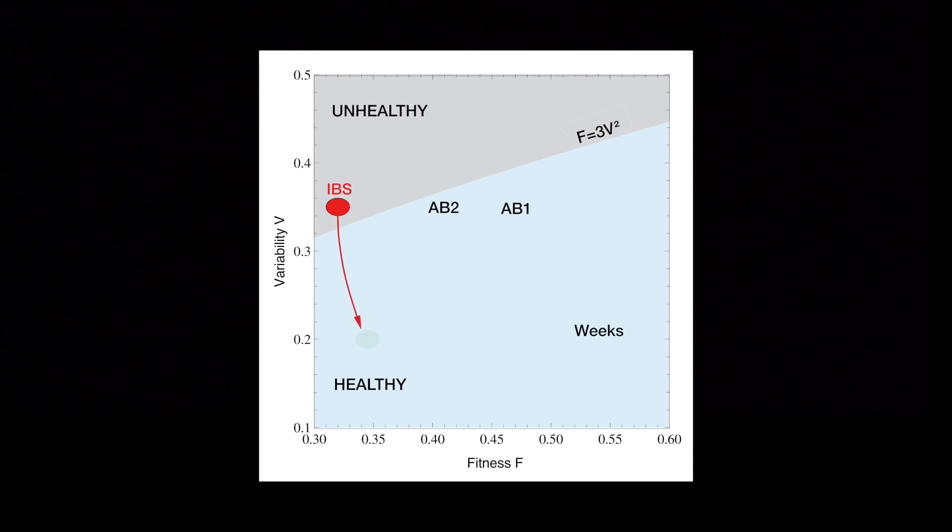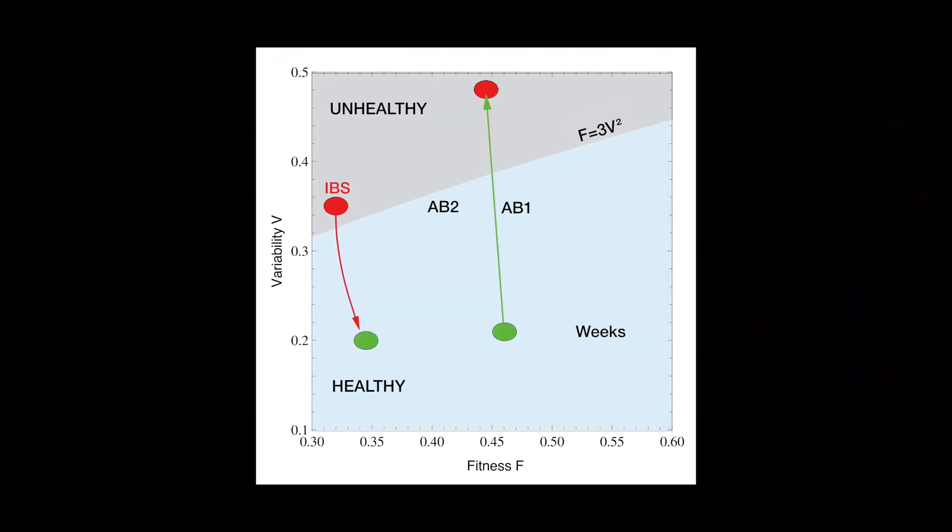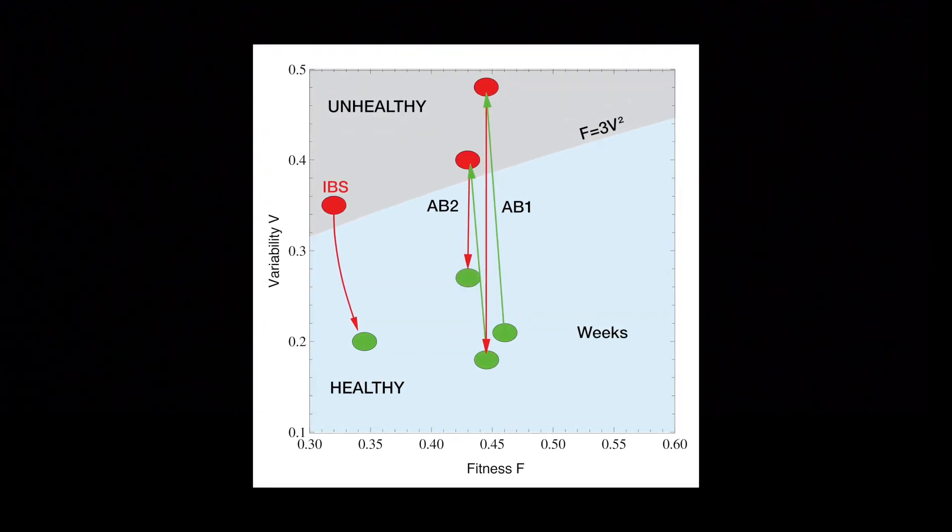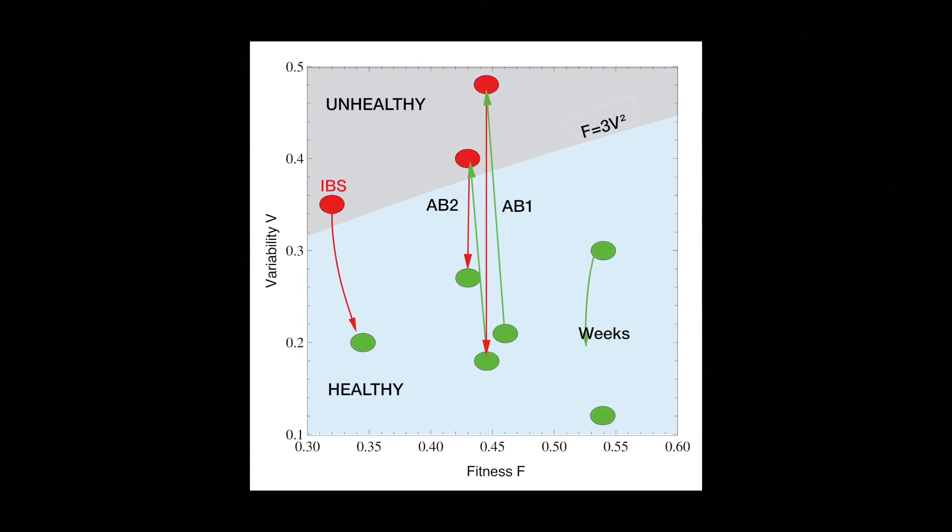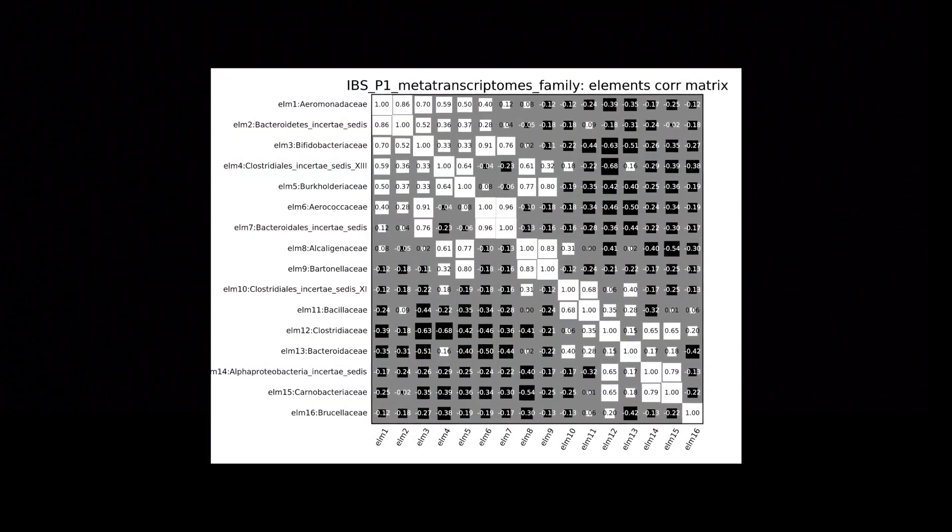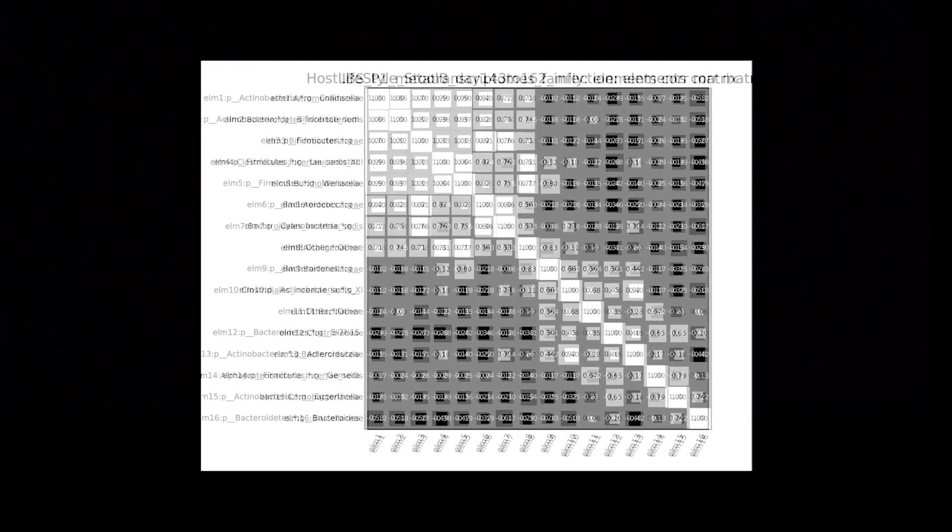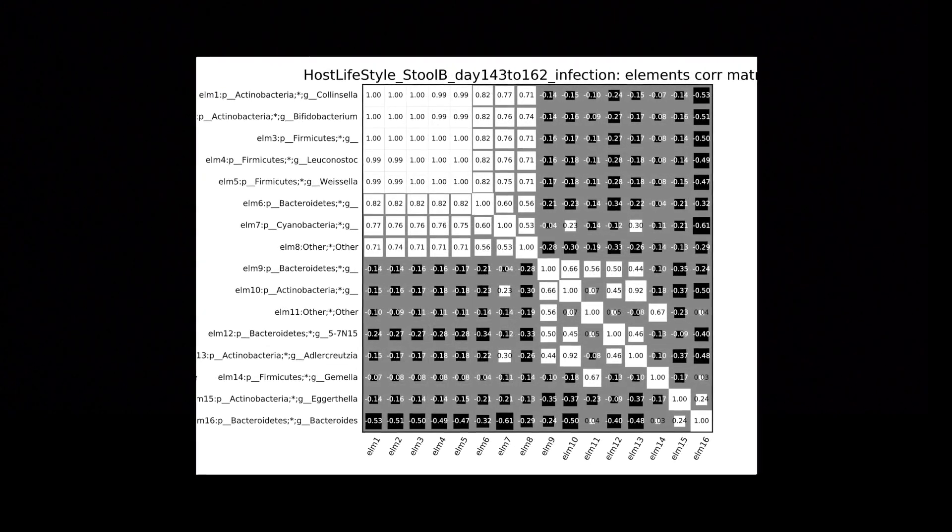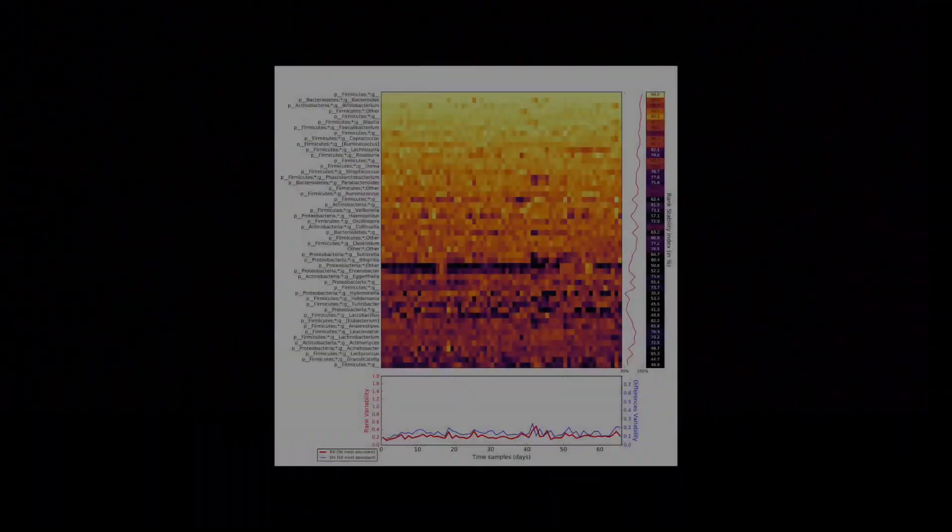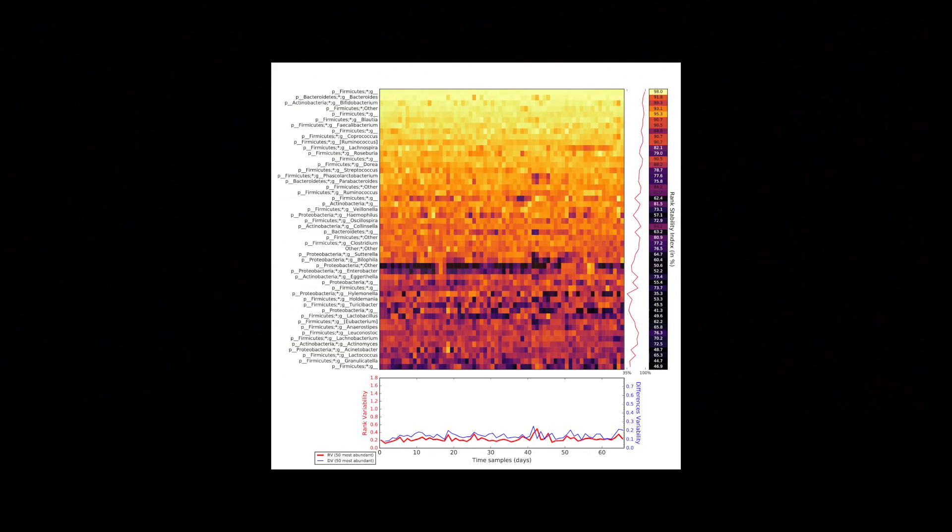We characterize the continuous phase transition from the healthy ordered phase to the unhealthy noise-induced phase. Time correlated series may identify the nature of the interactions present among bacteria by identifying strongly correlated consortia or rank stability islands sensitive to lifestyle changes.